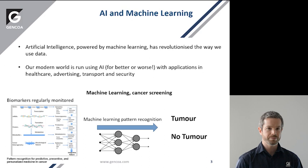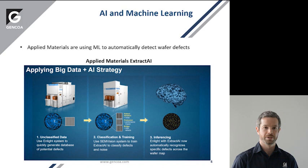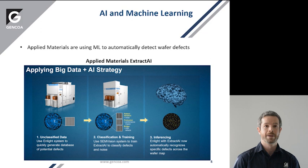Closer to home, Applied Materials, for example, are using machine learning to create AIs that are able to automatically and very quickly detect whether semiconductor wafers have defects on them, where those defects are, and then take action on those defects. So it's coming closer towards vacuum systems and vacuum processes day by day.